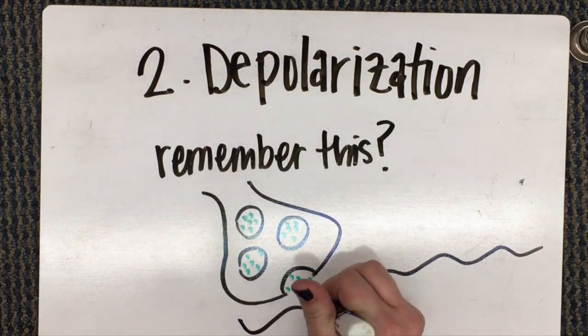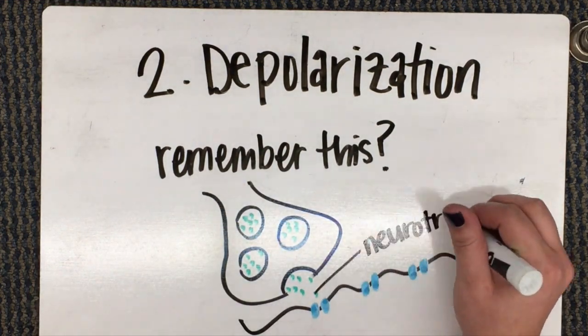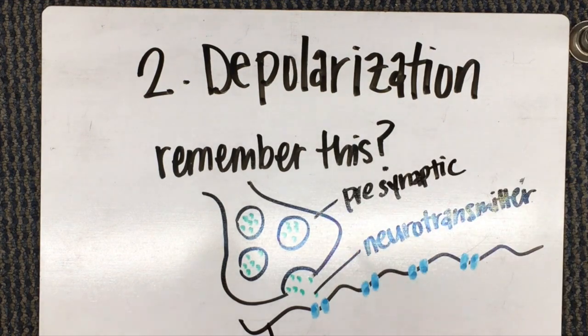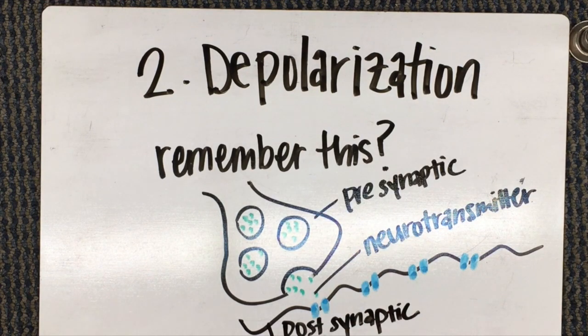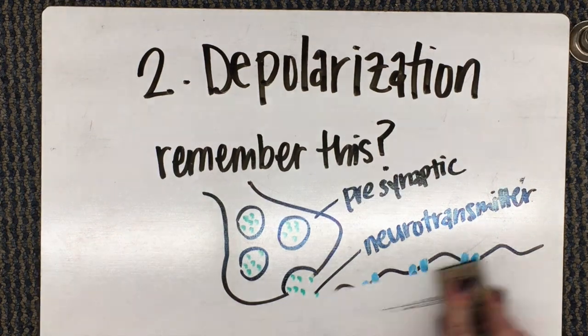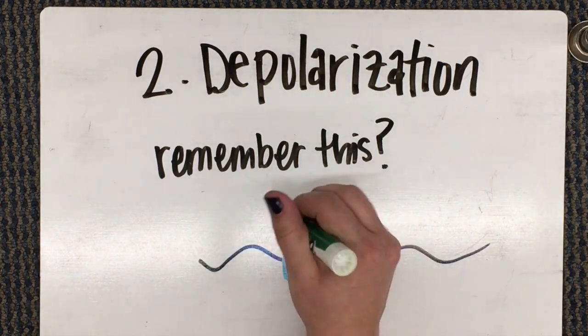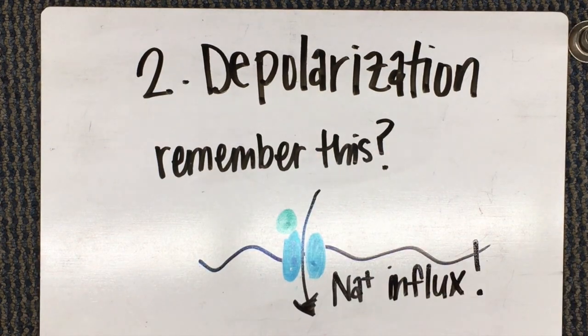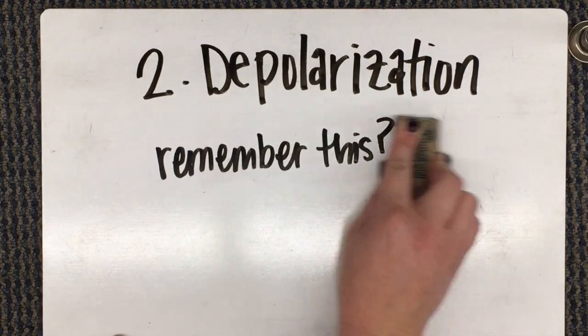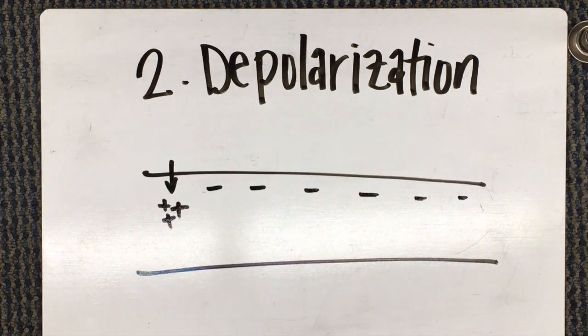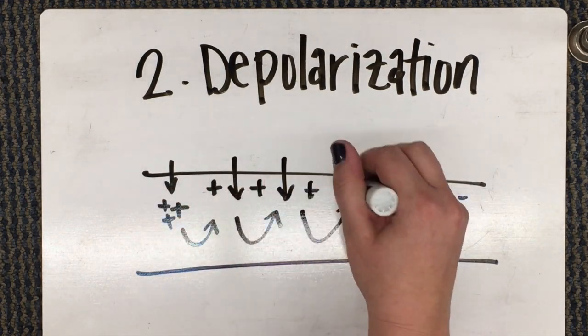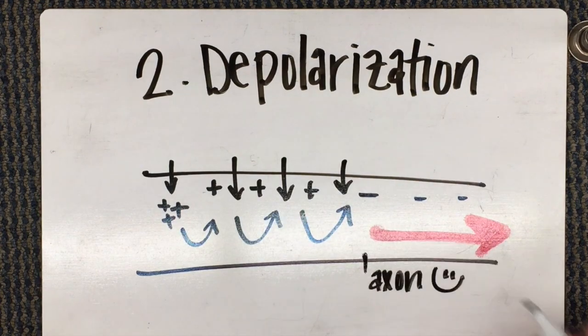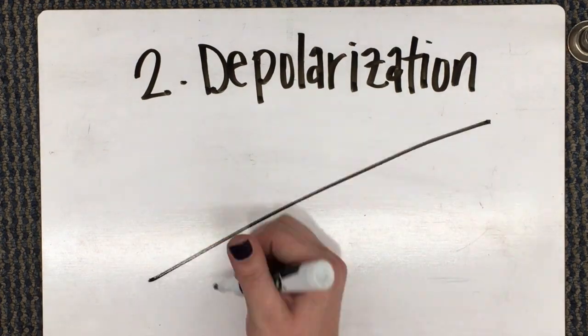Our second step is depolarization. Remember this from our muscle unit? Neurotransmitters are released from the presynaptic cell to bind to receptors on the postsynaptic cell. When they bind in this chemically gated channel, they allow sodium to enter the cell. That positive influx stimulates voltage-gated receptors to open on neighboring channels along the length of the axon.